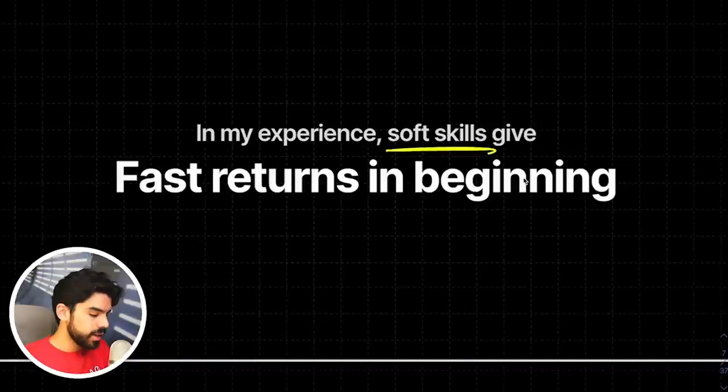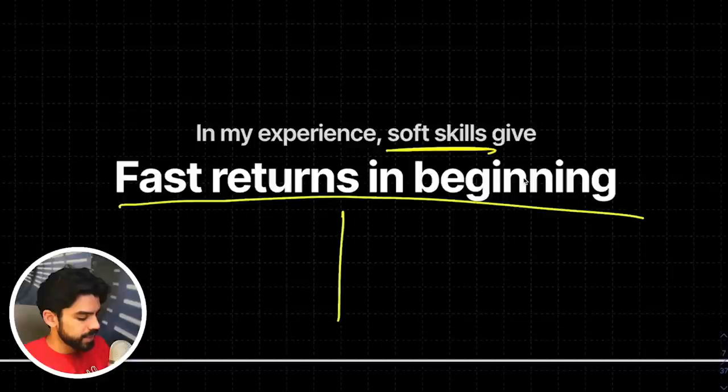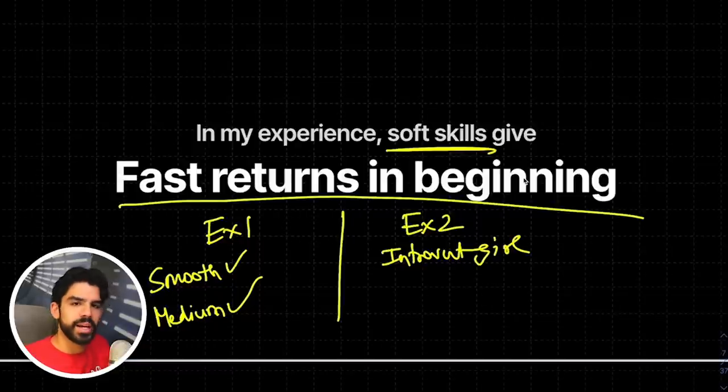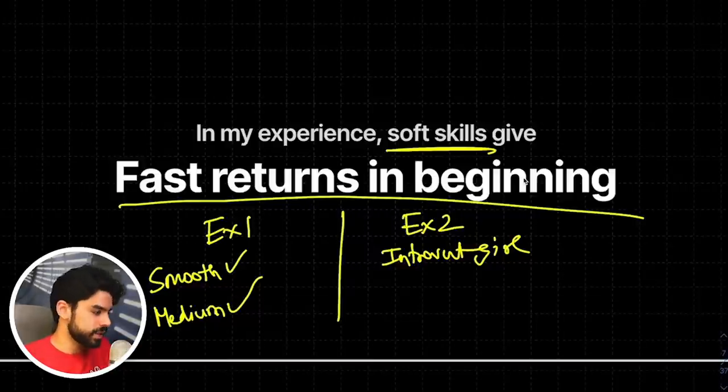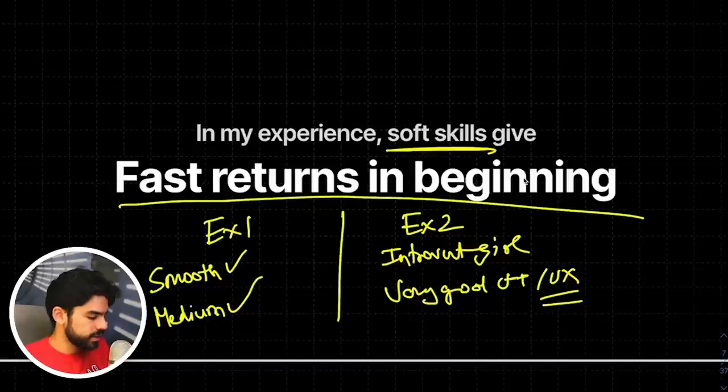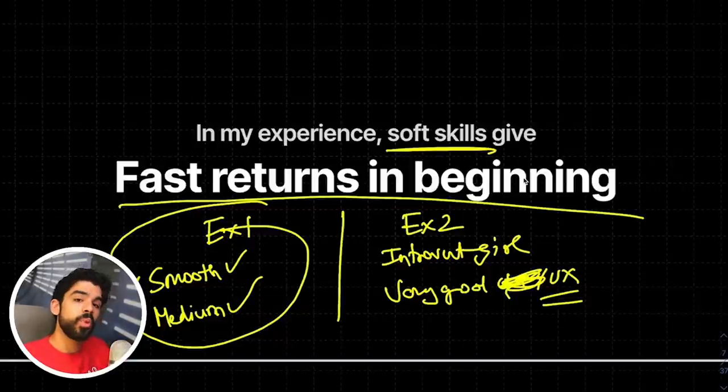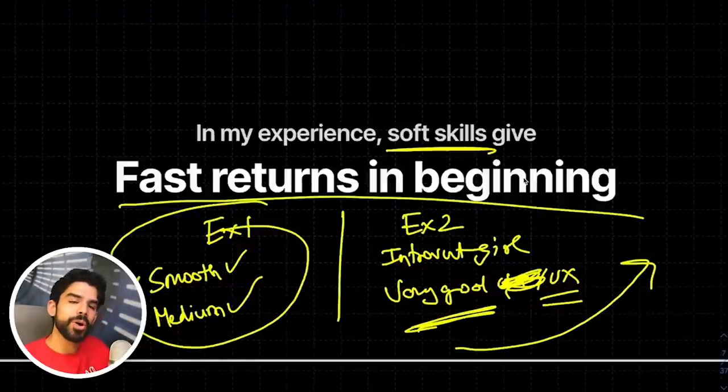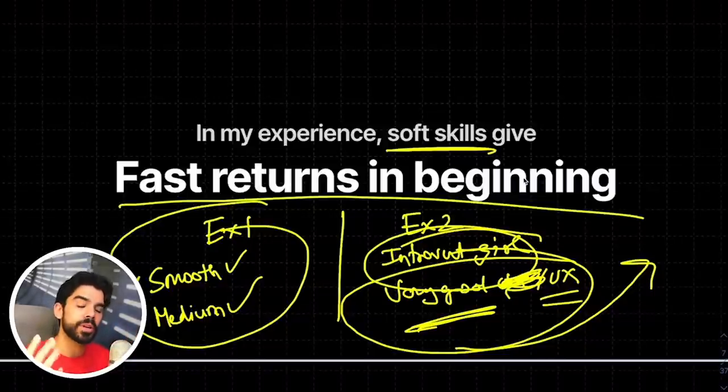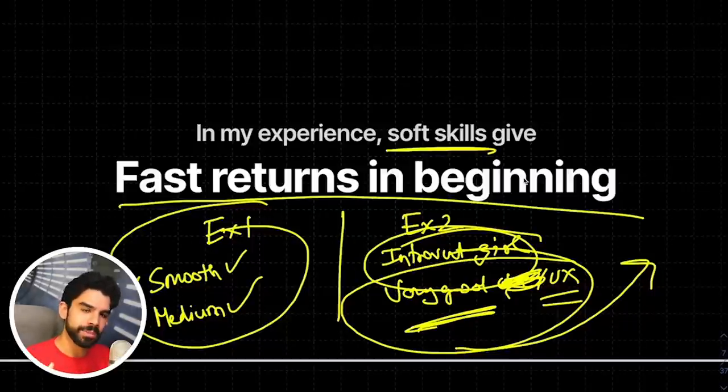In my experience, if you're just a smooth talker, you will get very fast returns in the beginning. So let's take two examples. Example number one is of a person who's a great smooth talker and a mediocre designer. Example number two is an introvert girl who is very good at designing UI and user experience overall. In the short run, this person might get more money and attention. But with time, after sixth or seventh year, this girl will catch up. Eventually, all the big brands will identify the talent over the smooth talk. So never fall into this myth that if I'm a good communicator without having enough information about execution, you will hit a ceiling.